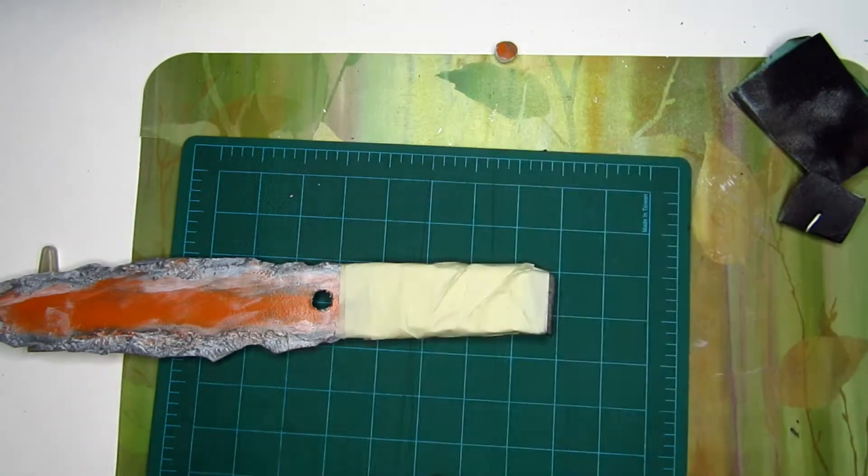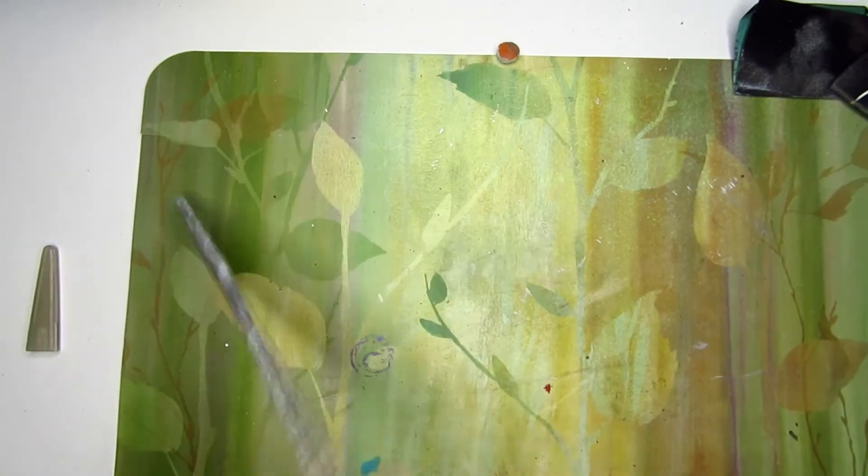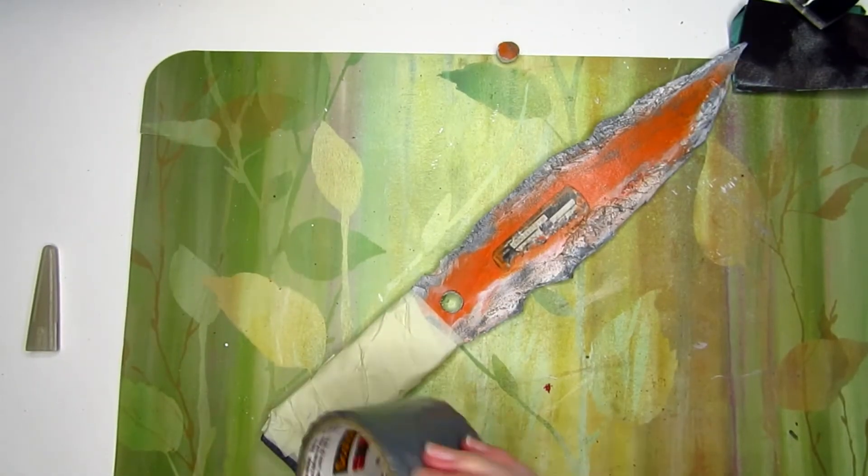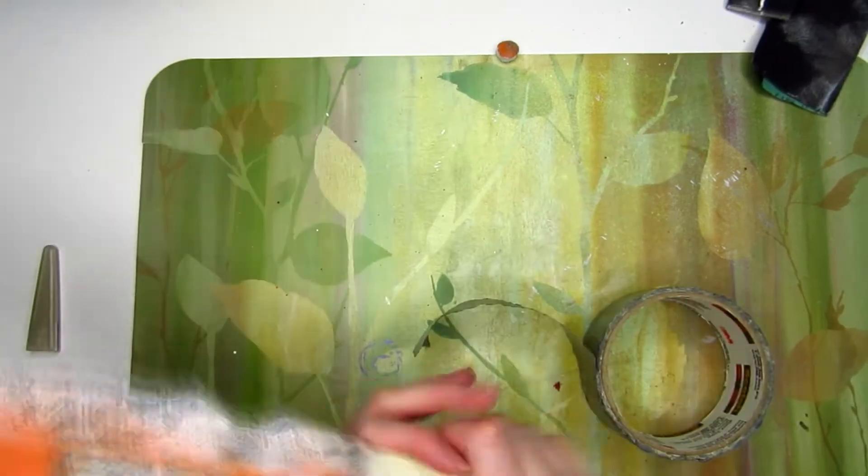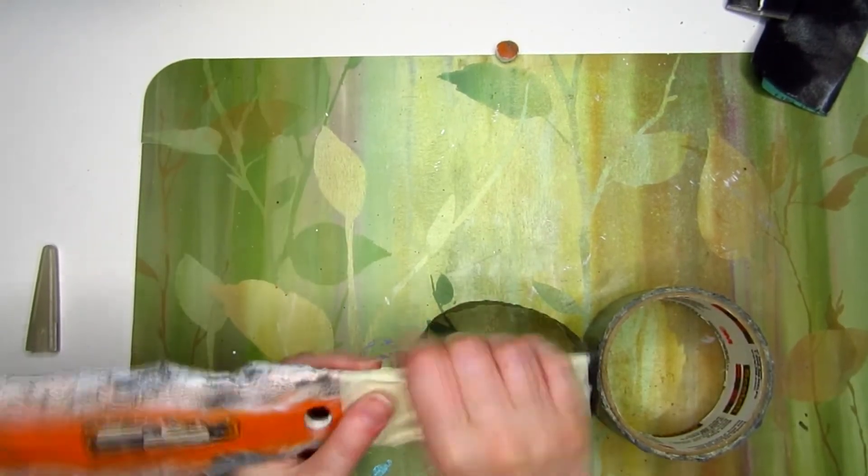I added a few layers of masking tape to the handle since I didn't have too much duct tape left just to bulk it up a bit. Then I proceeded to wrap it with the silver duct tape as seen in the reference photo.